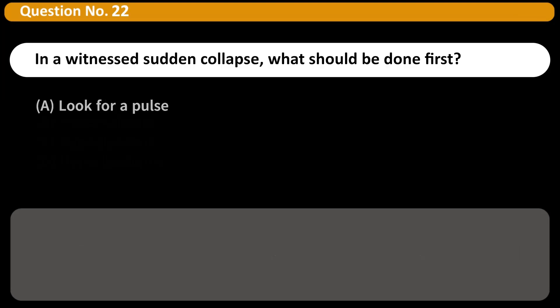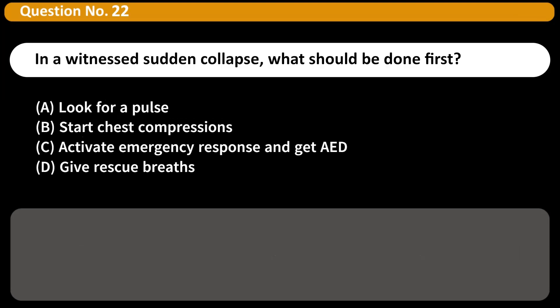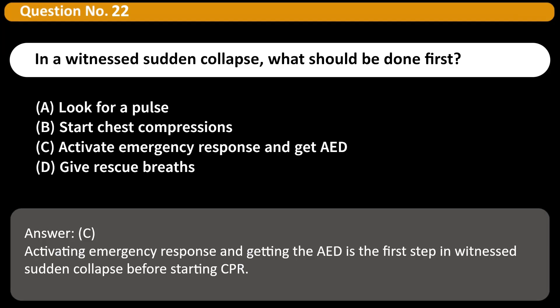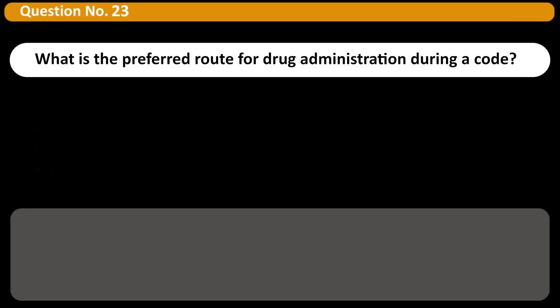In a witnessed sudden collapse, what should be done first? A. Look for a pulse. B. Start chest compressions. C. Activate emergency response and get AED. D. Give rescue breaths. Answer: C. Activating emergency response and getting the AED is the first step in witnessed sudden collapse before starting CPR.